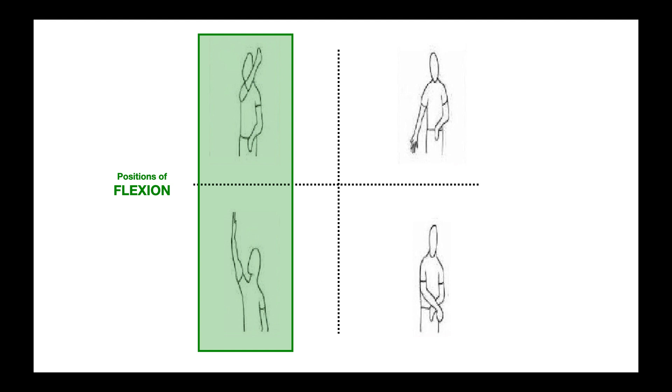First, in green here, we have positions of flexion. Why are these flexion? Because if we look at the shoulder joint, in other words the proximal joint, it is flexed. Remember, when the shoulder is elevated, it is flexed. So these are the two flexed positions.